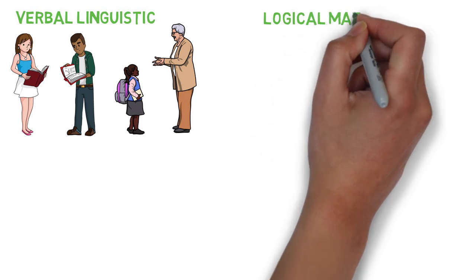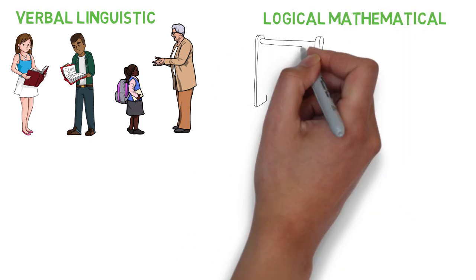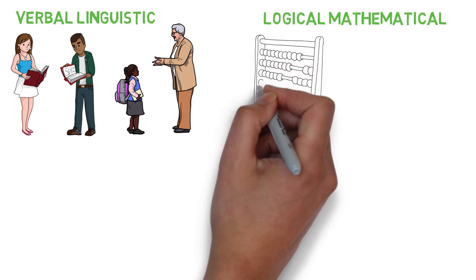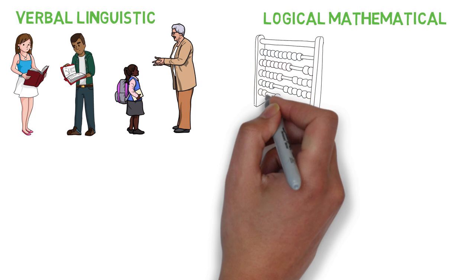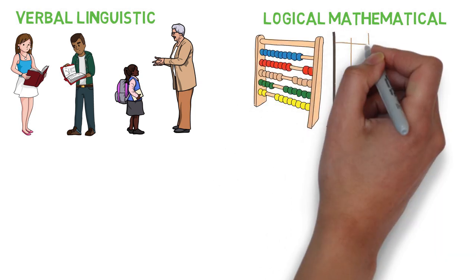The second one is called logical mathematical intelligence. People with logical mathematical intelligence process information through logic and reason. They analyze situations or problems logically, identify solutions and solve mathematical operations easily.